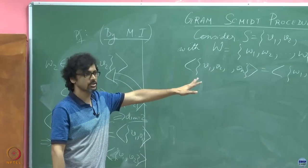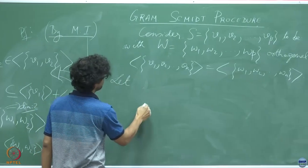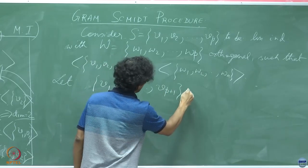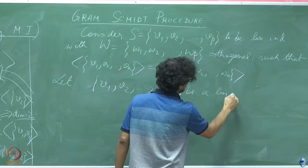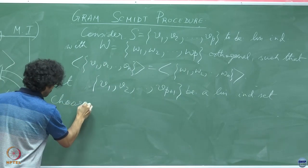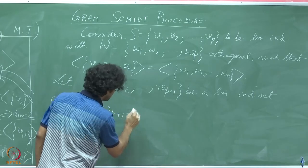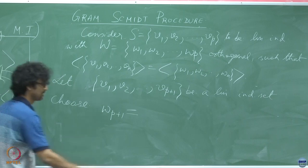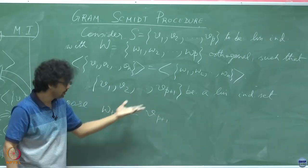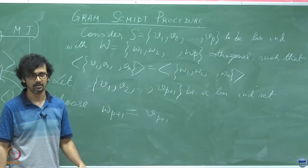So the idea is going to be very much the same as what we have done for 2, which is why we put some effort behind it. Let V 1, V 2, V P plus 1 be a linearly independent set and choose the P plus first fellow that is W P plus 1 as, any guesses? Same idea: V P plus 1, the new fellow that has come in, the new kid on the block, but you have to take something out.